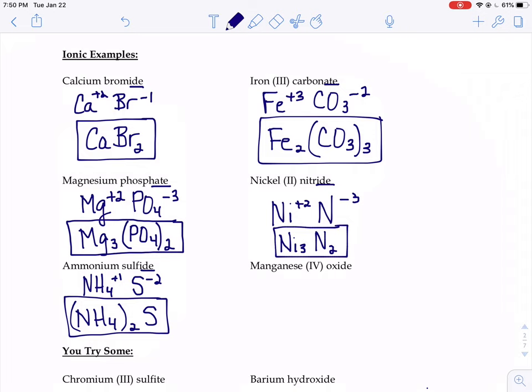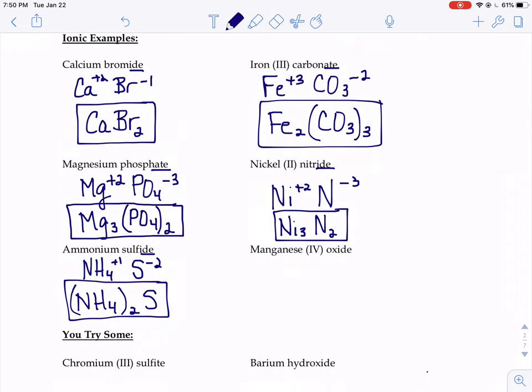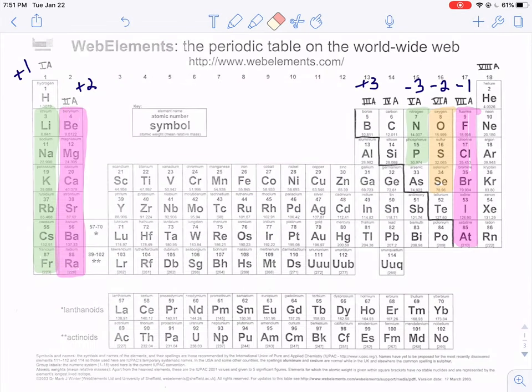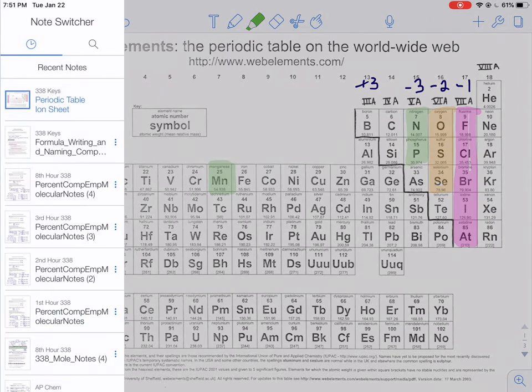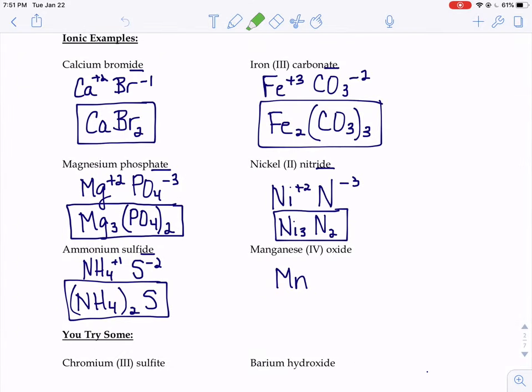One last example where we've got some Roman numerals. Manganese 4 oxide. Be careful with manganese and magnesium. They sound an awful lot alike. Manganese is Mn. And when you look on that periodic table, manganese is right here in the middle. We cannot determine what its charge would be just by looking at the periodic table. So what are we going to do? It tells us here a Roman numeral of 4. The Roman numeral tells you what the charge is, plus 4.